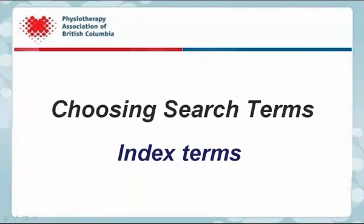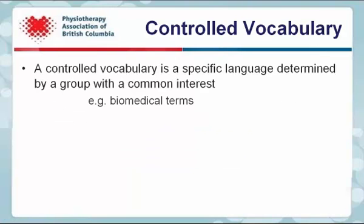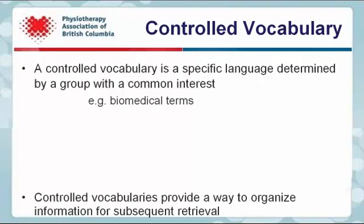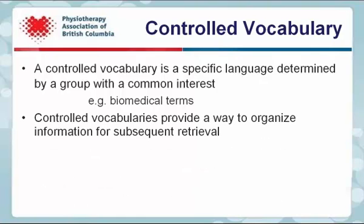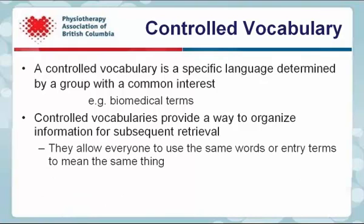This PABC tutorial will provide an introduction to what index terms are and how to use them in a search. A controlled vocabulary is a specific language determined by a group with a common interest. For example, a medical organization might develop a controlled vocabulary of biomedical terms. Controlled vocabularies provide a way to organize information for subsequent retrieval, allowing everyone to use the same words or entry terms to mean the same thing.